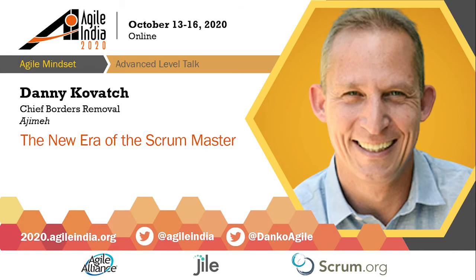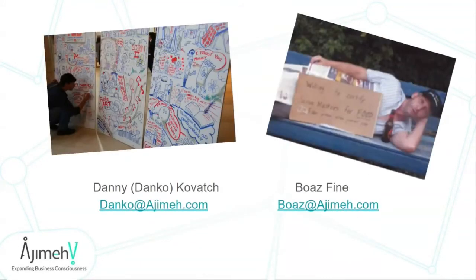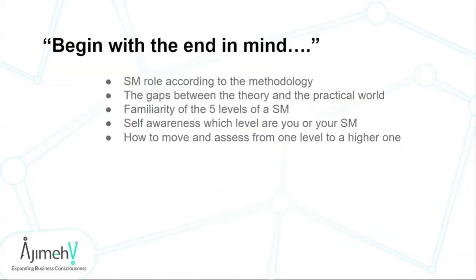We're going to talk about the new era of Scrum Master. The new era of Scrum Master is a Dojo model — a model developed in Ajime by trained agile coaches from industry field and experience. These are our emails if anyone wants to address us later, and in the discussion we can share our phones as well.